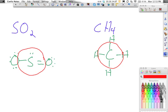When we're looking at sulfur dioxide, we're looking for charged clouds. We see we have one, two, and three. Some people want to say that double bond is two charged clouds, but it's not.